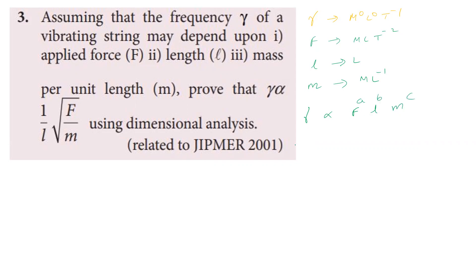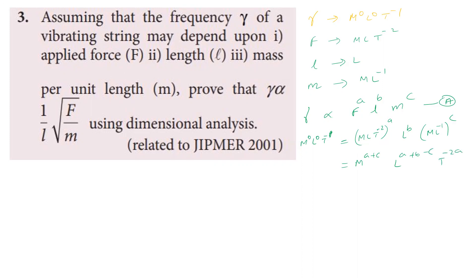We assume the frequency has powers A, B, and C corresponding to force, length, and linear density respectively. Substituting the dimension formulae: frequency is M⁰ L⁰ T⁻¹; force is M L T⁻²; length is L; and linear density (mass per unit length) is M L⁻¹. The combined right-hand side gives M^(A+C), L^(A+B-C), T^(-2A).